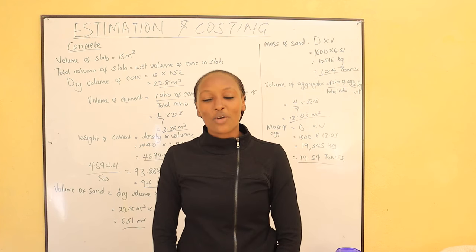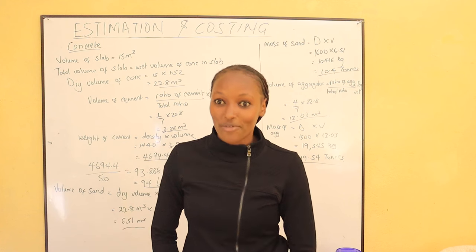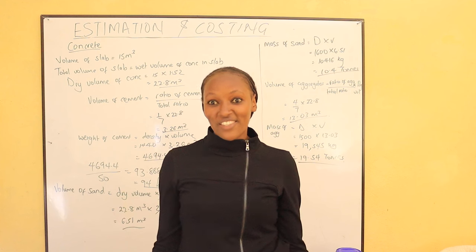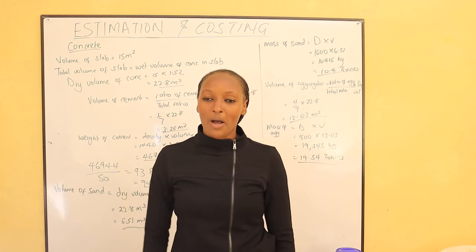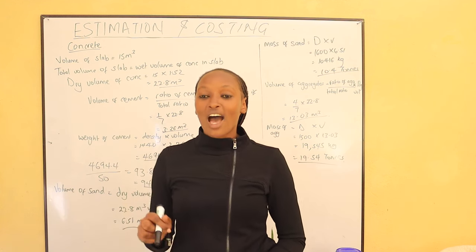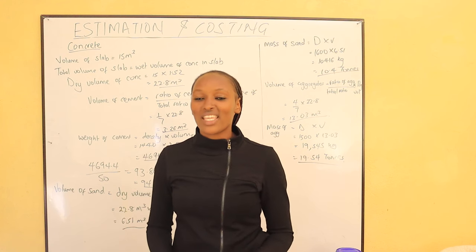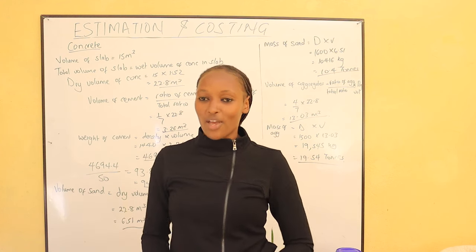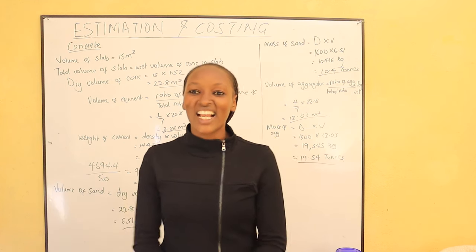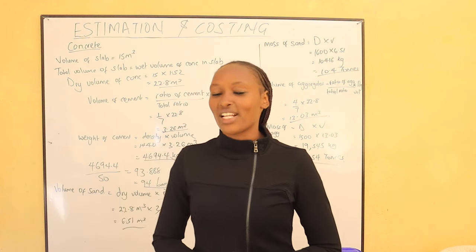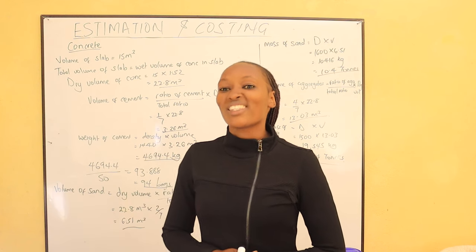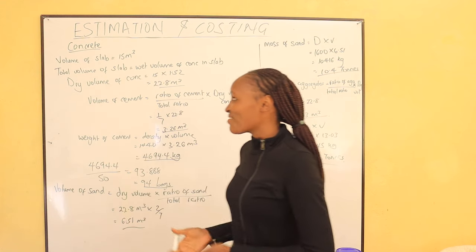In today's video, we are going to calculate the quantity of cement — the number of bags of cement — the quantity of sand, how many lorries of sand, and how many lorries of concrete. Basically, once we know the number of tons required for cement, sand and ballast, we can determine the size of lorry we should require from the distributor. Welcome to this series — if you haven't subscribed to our channel, kindly do subscribe.